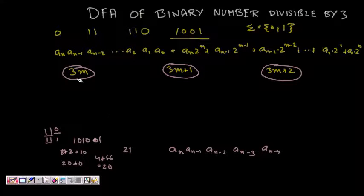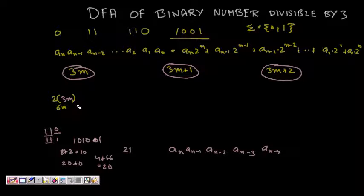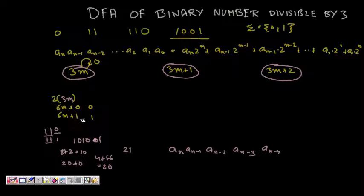If the current number is of the form 3M and I append the next bit, it becomes 2×3M = 6M. If a 0 comes, it remains 6M — still divisible by 3, so it stays in state 3M. If a 1 comes, it becomes 6M+1, which is of the form 3M+1, so it transitions to that state.